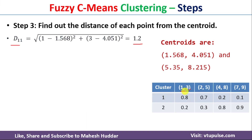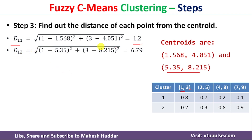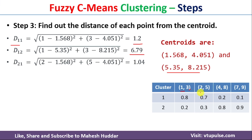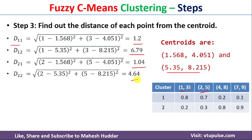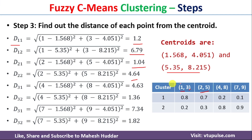Similarly, the distance from the first data point to the second centroid, d12, equals square root of (1−5.35)² plus (3−8.215)², which is equivalent to 6.79. For the second data point, the distance to the first centroid is 1.04 and the distance to the second centroid is 4.64. Similarly, we calculate the distances from the third and fourth data points to both centroids, and the resulting distances are summarized in the table.